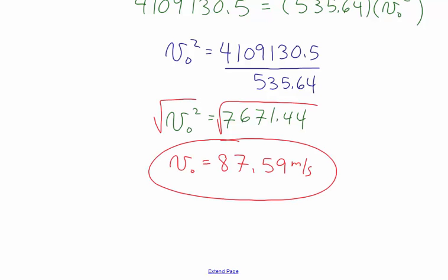So to throw the pumpkin 750 meters from a height of 10 meters at a 35-degree angle, it must be launched at 87.59 meters per second. This is a large velocity because 750 meters is 7.5 football fields. This problem is a good example of setting up two equations with two unknowns to solve for the initial speed of an object.